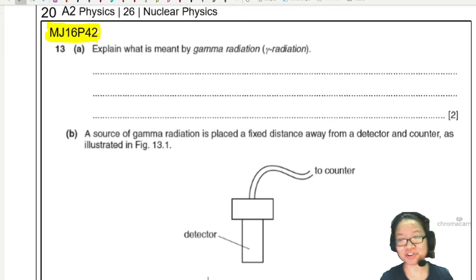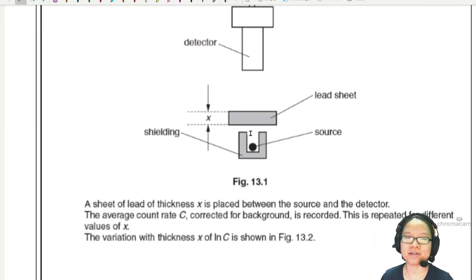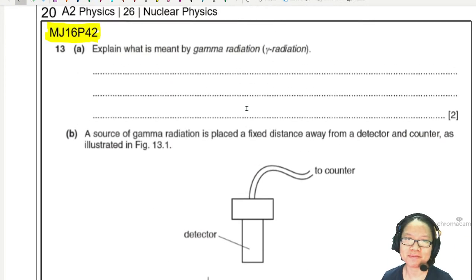Hello, welcome to the very first example for nuclear physics. In this example, we are going to look at how a detector detects radiation from a radioactive source and how this detector reading will change according to the thickness of a lead sheet. If you're ready, let's go.